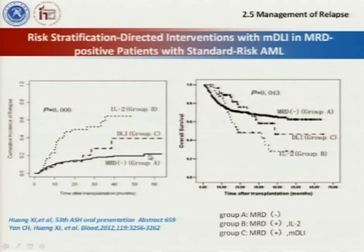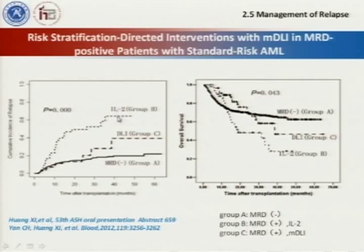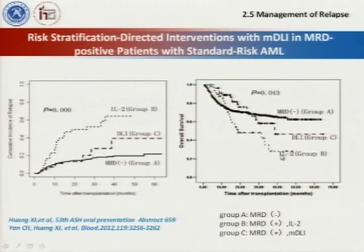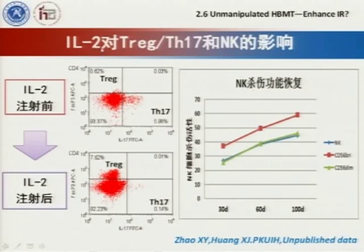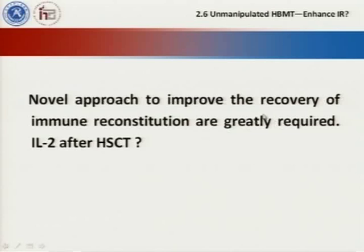For standard-risk patients, we use MRD monitoring after haploidentical transplantation. If MRD was positive, we use donor lymphocyte infusion for intervention. Our data demonstrates this strategy can decrease relapse and improve survival. Patients with MRD-positive status who received donor lymphocyte infusion had significantly higher disease-free survival compared to those who received interleukin-2 intervention. We are also trying to influence immune reconstitution after haploidentical transplantation, which can further improve outcomes.